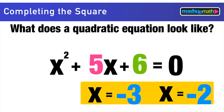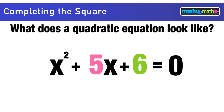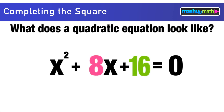Now we're working on the next level, where the quadratics we encounter are not so easily factorable. So before getting into more advanced examples, let's look at another simple quadratic: x² + 8x + 16 = 0.